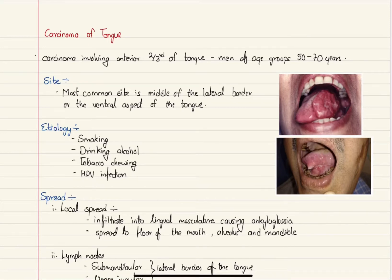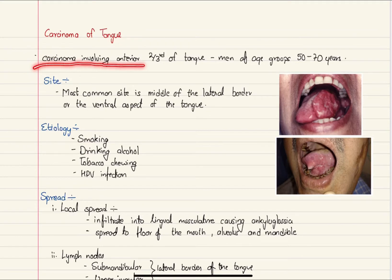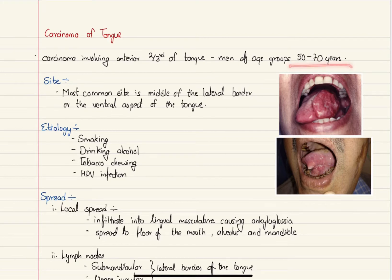In this video we're going to learn about carcinoma of the tongue. Carcinoma involving the anterior two-thirds of the tongue is commonly seen in men of age groups 50 to 70 years; however, it may also occur in younger age groups and in females.